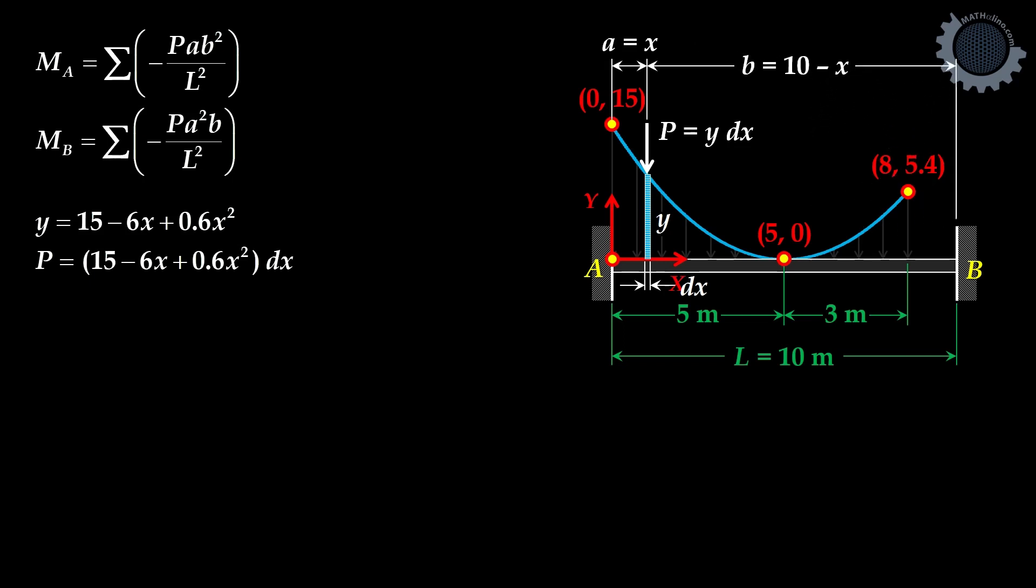Moment at A, from the formula, we have negative P times A times B squared all over L squared, sum up from 0 to 8. This is the moment at A.